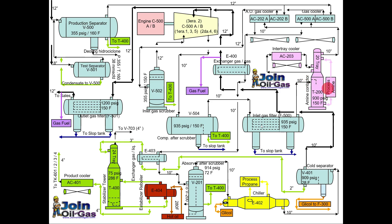The gas now moves to the contactor, where a rich amine solution is circulating. The gas comes in contact with the liquid, and all the undesirable components — for example hydrogen sulfide (H₂S), CO₂, or any other unwanted gases — will be absorbed by the amine solution. The clean, desired gas moves out from the top and is sent through the process gas cooler for further cooling.